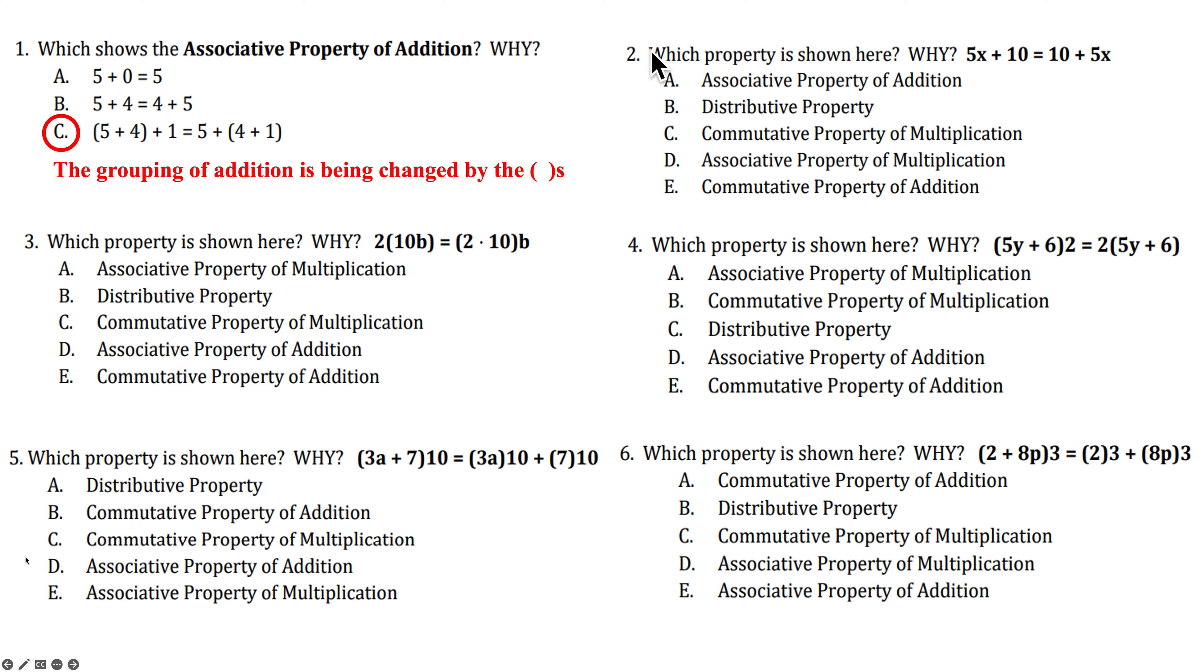Number two. Which property is shown here? So I have 5X plus 10 equals 10 plus 5X. I physically changed the order of 5X and 10 around the addition sign. So I'm changing the order. That's commutative. Since I changed it around the plus sign, that's the commutative property of addition. And that's E. Again, you're changing the order of the terms around the plus sign.